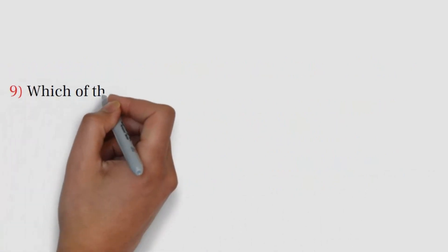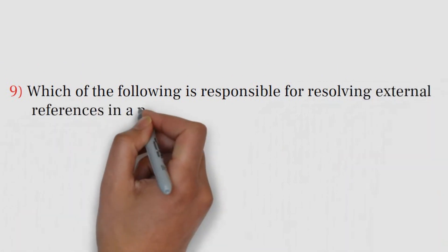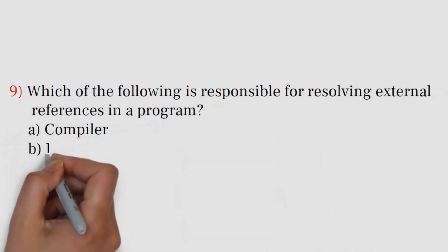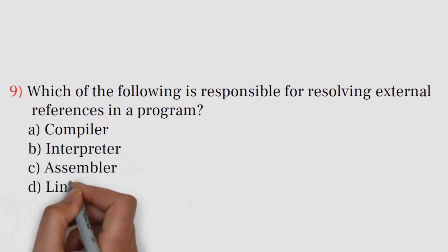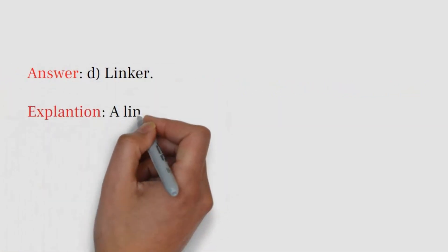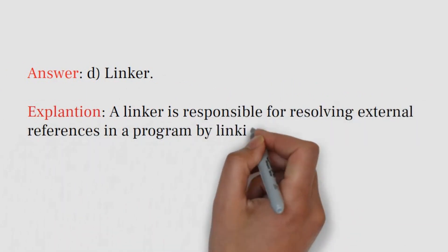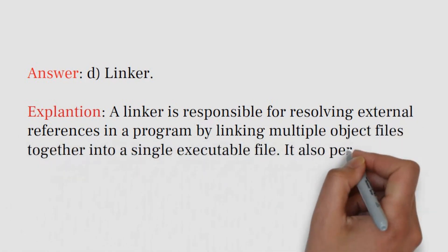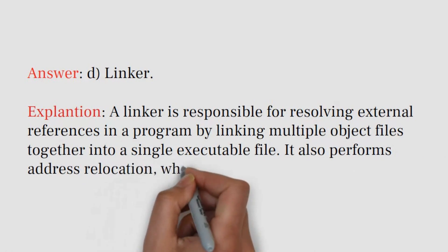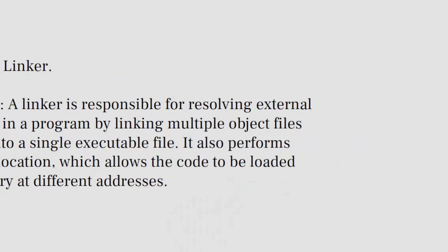Question number 9. Which of the following is responsible for resolving external references in a program? Answer: D. Linker. Explanation: A linker is responsible for resolving external references in a program by linking multiple object files together into a single executable file. It also performs address relocation, which allows the code to be loaded into memory at different addresses.